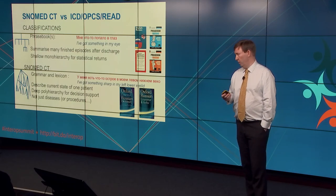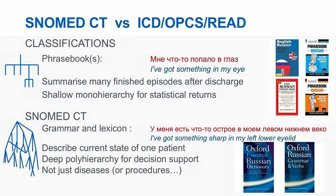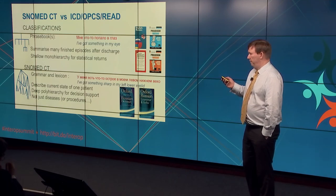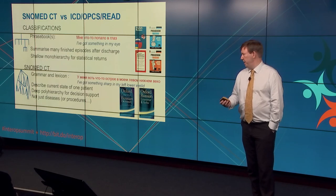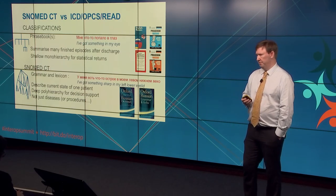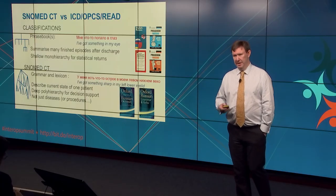As we saw yesterday, they're typically organised into monoaxial trees — you can't be in two places at once; you can't be both in the respiratory diseases chapter and infectious diseases and neurology chapter. SNOMED CT and other things like it offer more of a grammar and lexicon approach — trying to enable you to speak the language, so if you want to say 'I've got something sharp in my left lower eyelid', you can. Whereas ICD is just morbidity, and OPCS is just procedures, SNOMED is both of those and quite a bit more. That's both a benefit and a problem.